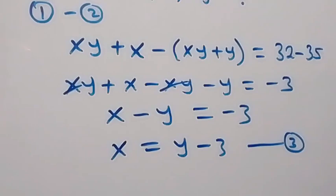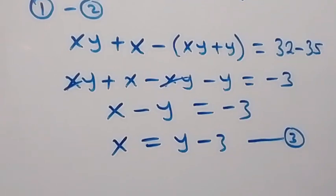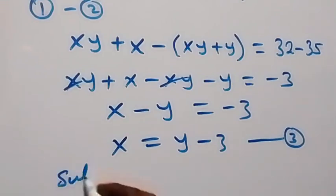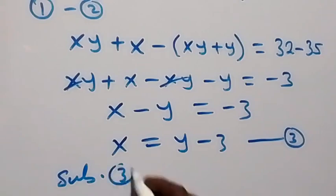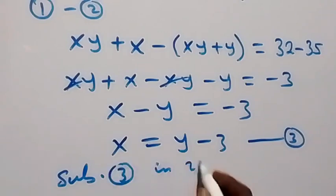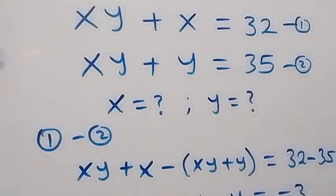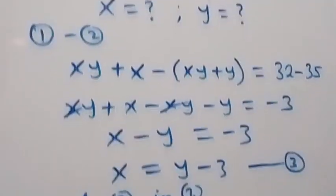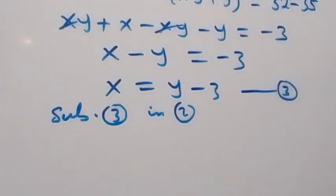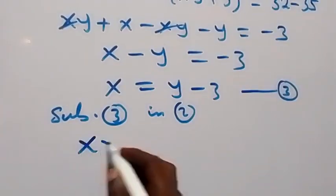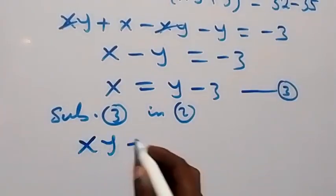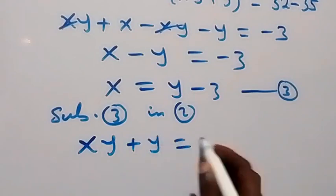From here, we can substitute equation 3 in equation 2. Substituting equation 3 in equation 2 — what we have in equation 2 is xy plus y equals to 35.